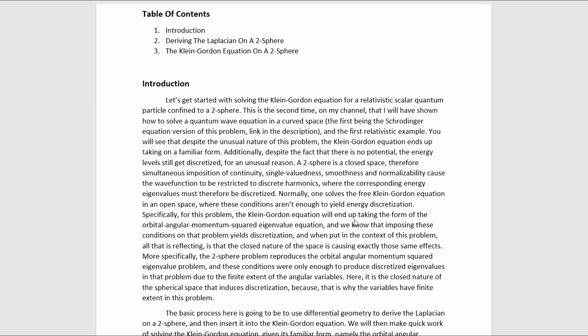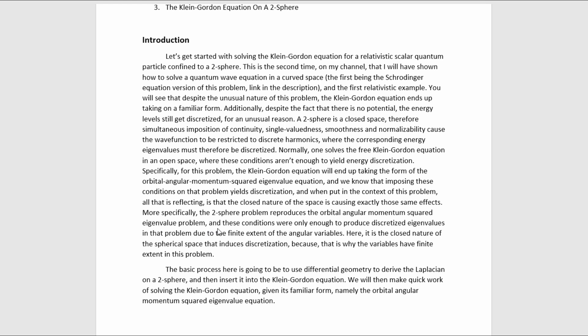Specifically for this problem, the Klein-Gordon equation will end up taking on the form of the orbital angular momentum squared eigenvalue equation. We know that imposing these conditions on that problem yields discretization, and when put in the context of this problem, all that is reflecting is that the closed nature of the space is causing exactly the same effects. More specifically, the 2-sphere problem reproduces the orbital angular momentum squared eigenvalue problem, and these conditions were only enough to produce discretized eigenvalues in that problem due to the finite extent of the angular variables. Here, it is the closed nature of the spherical space that induces discretization, because that is why the variables have finite extent in this problem.